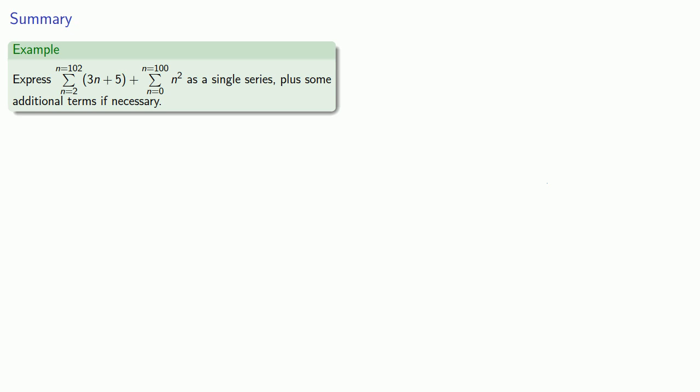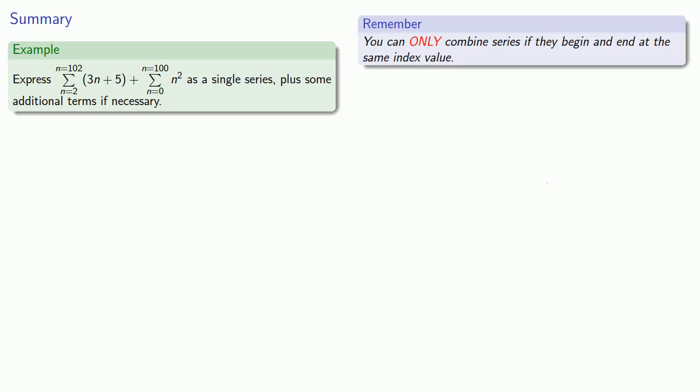Let's say I want to sum n equals 2 to 100 of the series whose terms are 3n plus 5 and add to that the sum from 0 to 100 of the series whose terms look like n squared. An important idea to remember is that we can only combine series if they begin and end at the same index value. The first series runs from 2 to 102, while the second series runs from 0 to 100. This means they overlap in the interval between 2 and 100.